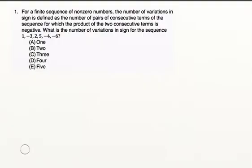For a finite sequence of non-zero numbers, the number of variations in sign is defined as the number of pairs of consecutive terms of the sequence for which the product of the two consecutive terms is negative. What is the number of variations in sign for the sequence?